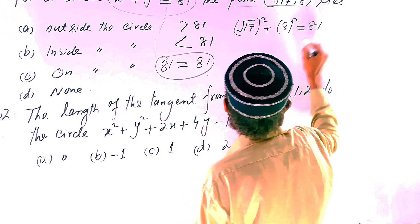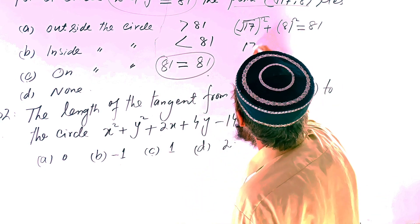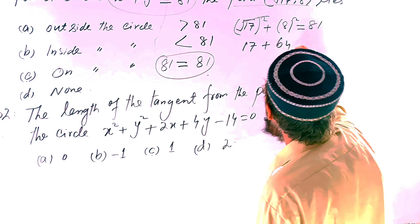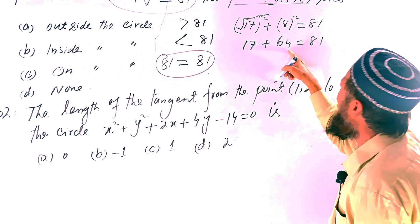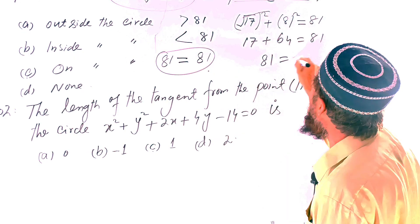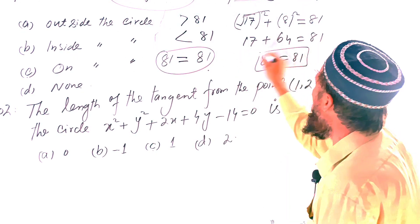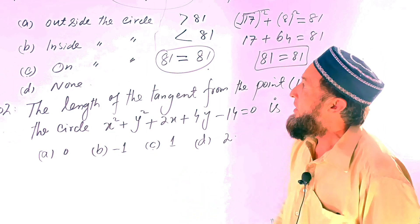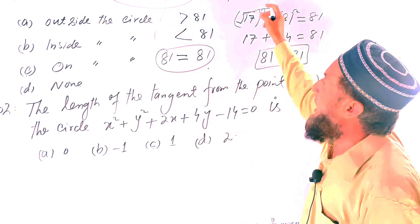17 plus 64 is equal to 81. 7 + 4 = 11, carry 1, and we get 81. So 81 is equal to 81. Yes, the given point lies on the circle.